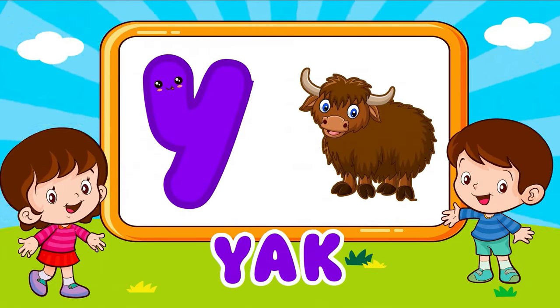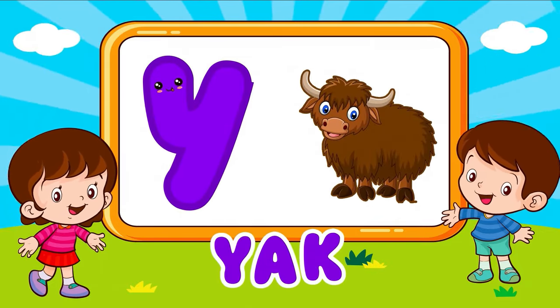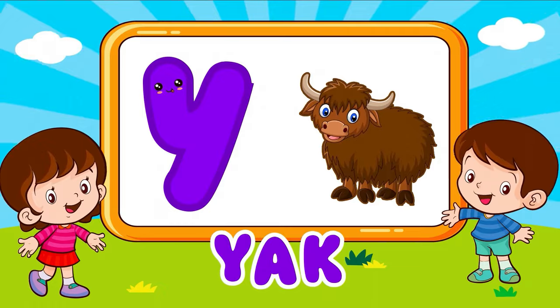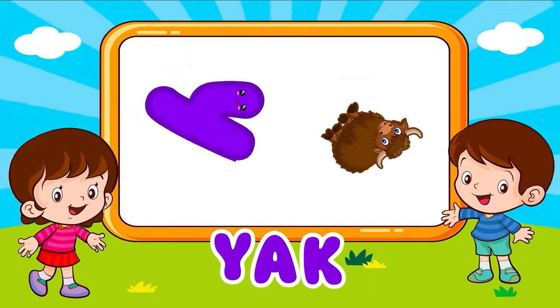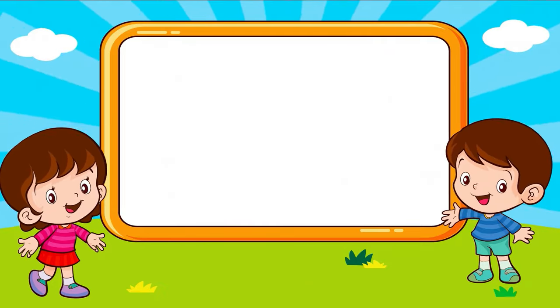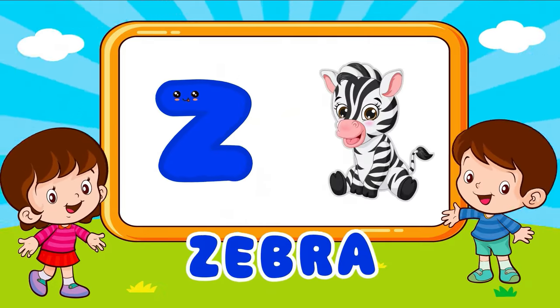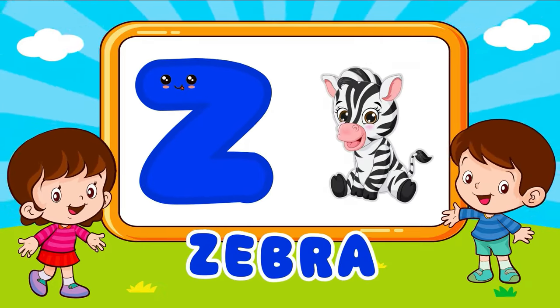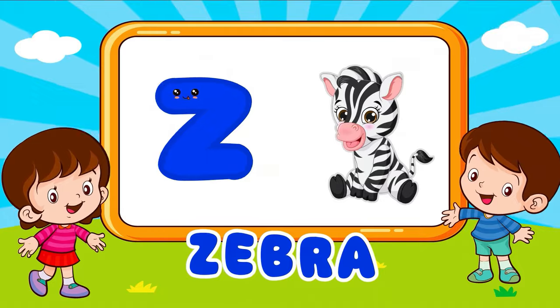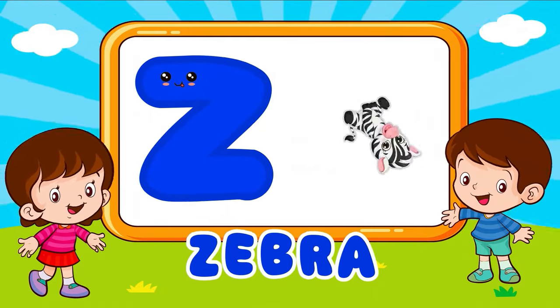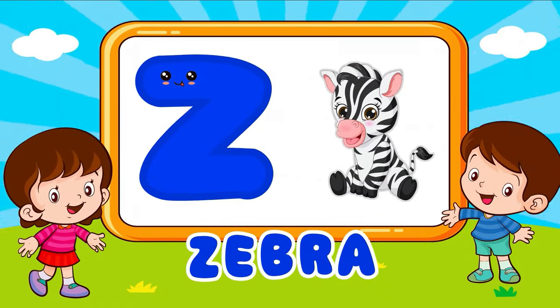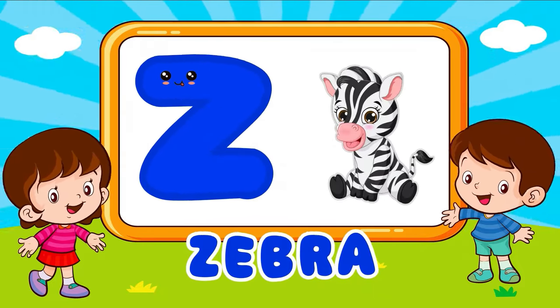Y is for yacht. Y, Y, Y is for yacht. Y, Y, Y, Y. Z is for zebra. Z, Zebra, Z is for zebra. Z, Z.